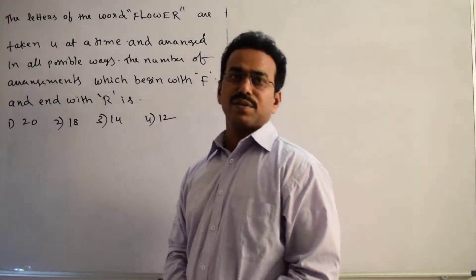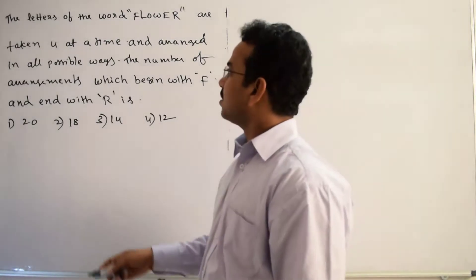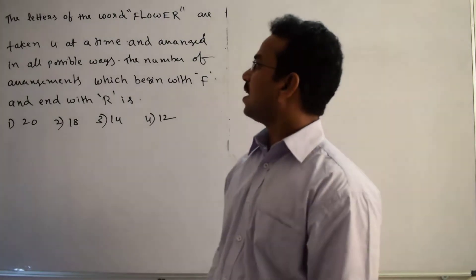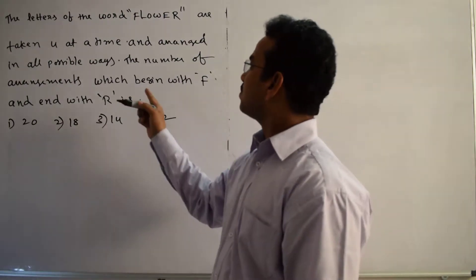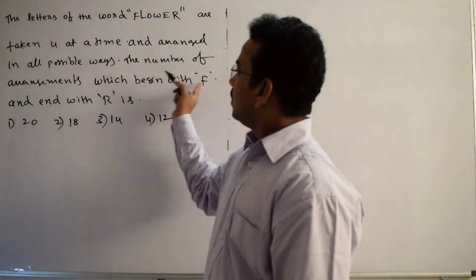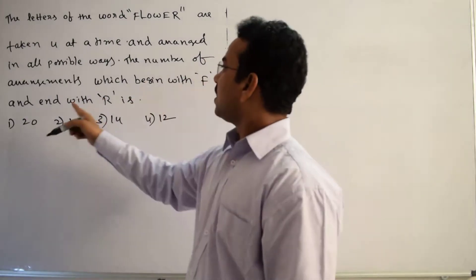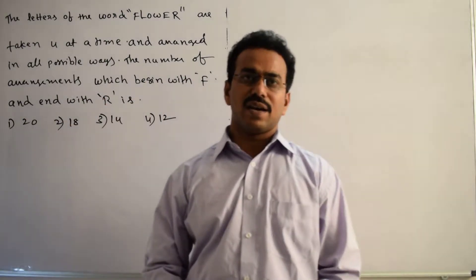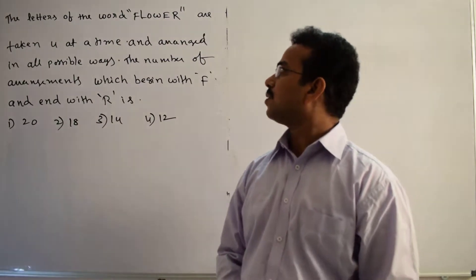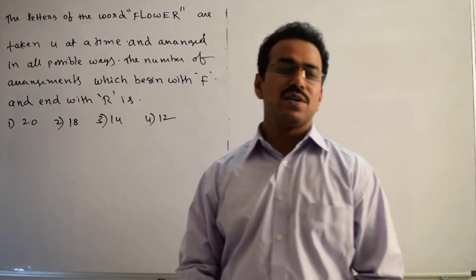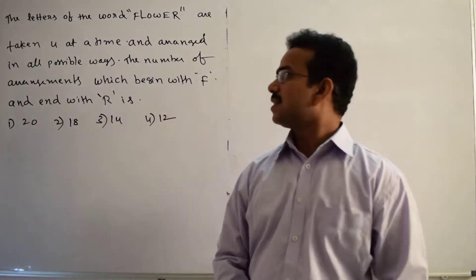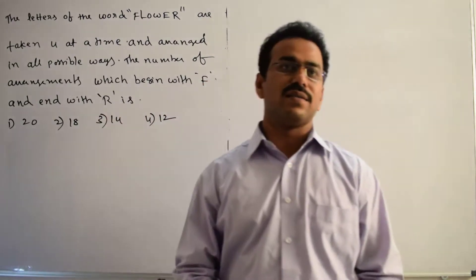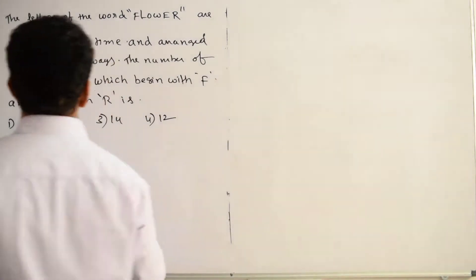Let's discuss the solution of the given question. The letters of the word FLOWER are taken 4 at a time and arranged in all possible ways. We need to find the number of arrangements which begin with F and end with R. Our task is to find the total number of 4-letter words that begin with F and end with R. First, let me write the given letters of the word.